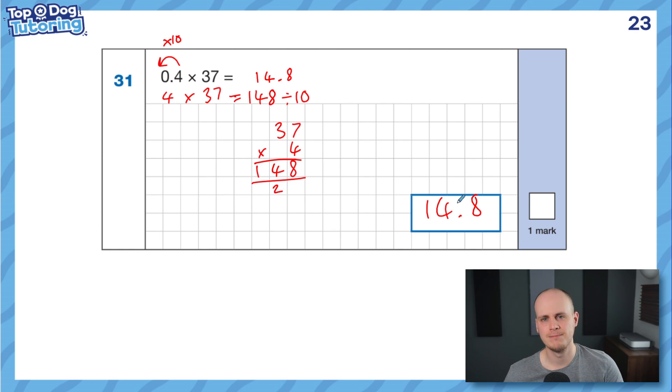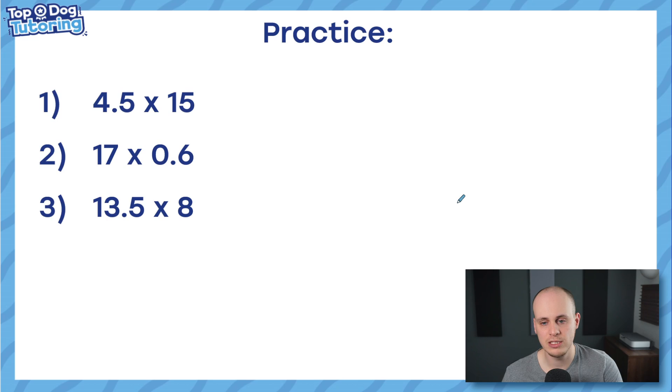Does that make sense, guys? So simply take the factor that's become a decimal, times it by 10 to turn it back into a whole number. Find out the answer to that multiplication question, and then just divide your answer by 10 at the end to balance out the fact that you timesed by 10 at the beginning. I'd like you to have a little practice with these questions. I'd be turning this into 45 times 15, and then I'd be adjusting my answer at the end. Pause the video. Have a go at these three questions. Come back for the answers.